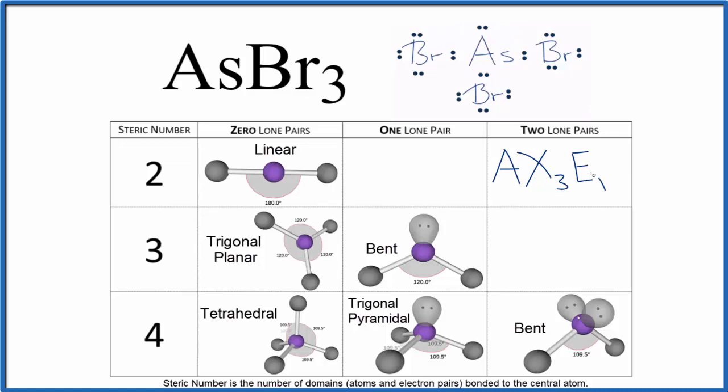So we have AX3E, and that, if you look it up, trigonal pyramidal. So, this is Dr. B with the molecular geometry for AsBr3. Thanks for watching.